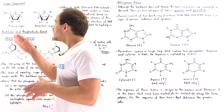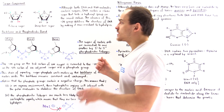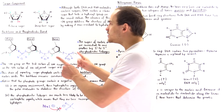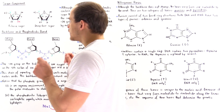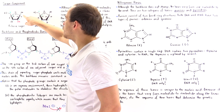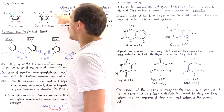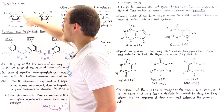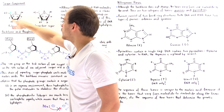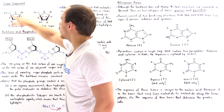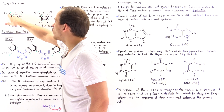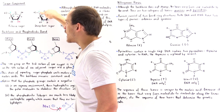Let's compare and contrast these two sugars. Each of these sugars contains five carbon atoms: carbon number one (1'), carbon number two (2'), carbon number three (3'), carbon number four (4'), and carbon number five (5').